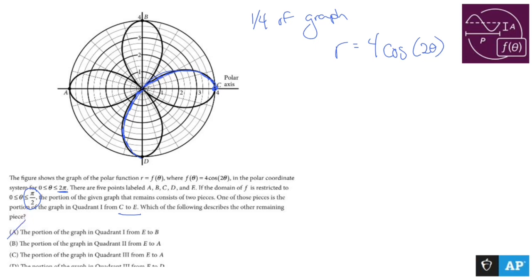The portion of the graph in quadrant three from E to D - nope, boink. The portion of the graph in quadrant three from E to D - that seems to be the guy that I want.